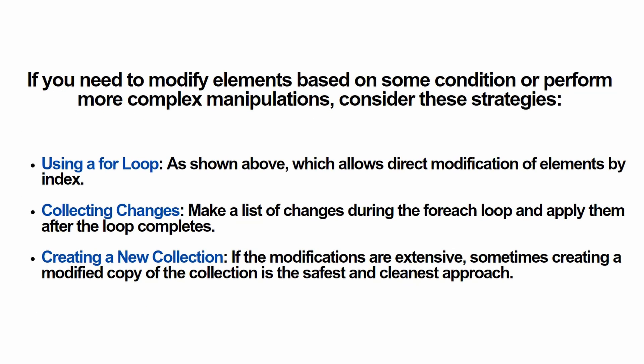As we saw, using foreach to modify a collection can fail in some cases but work in others. Instead of remembering which collections you can modify in a foreach loop, you should stick to the best practices: use a for loop instead of foreach; collect changes during the foreach loop and apply them after the loop is done; or create a new collection if the modifications are extensive — that is the safest and cleanest approach.